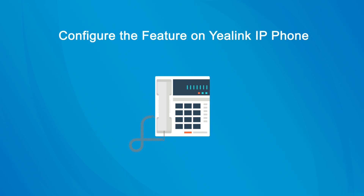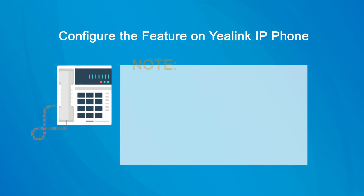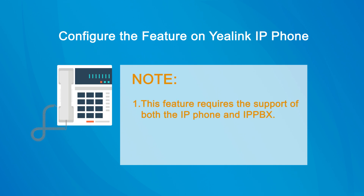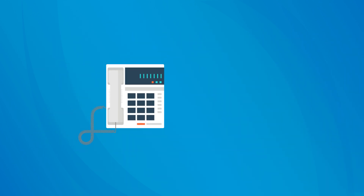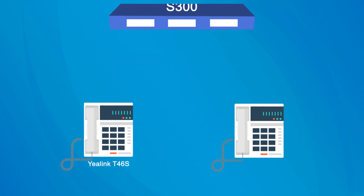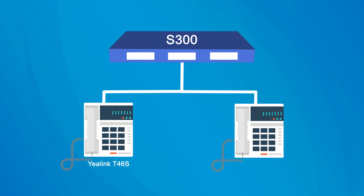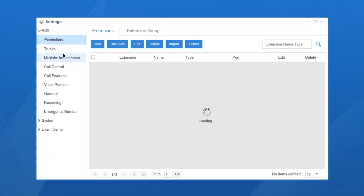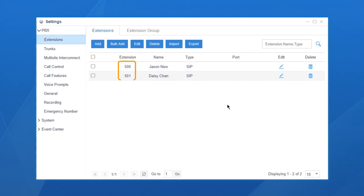Now let's see how to configure the feature on a Yealink IP phone. Before we get started, it's important to note that this feature requires the support of both the IP phone and IP PBX, and the IP phones should be connected to the same PBX. In this video, we will take the Yealink T46S as an example. The T46S and another IP phone have been connected to the same S300. Line 1 of both IP phones has been registered to extension 500 and 501 respectively.